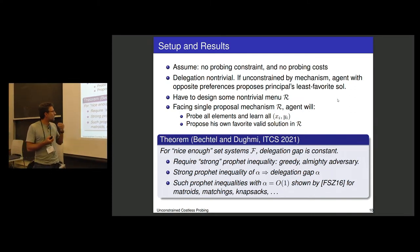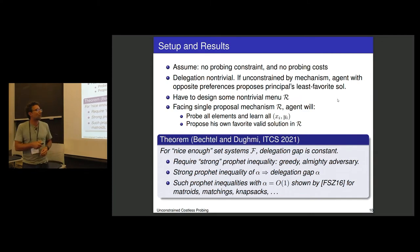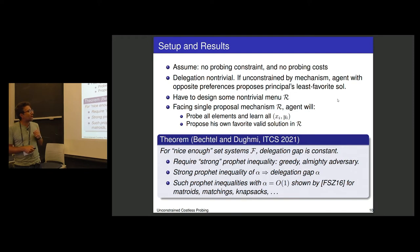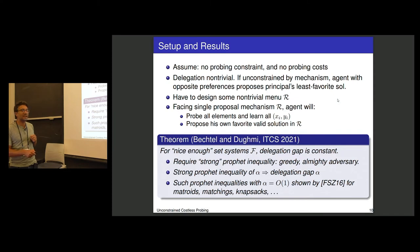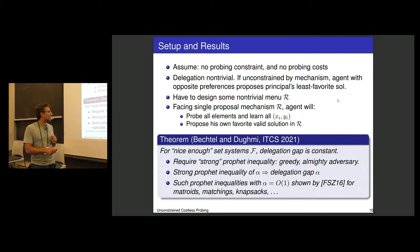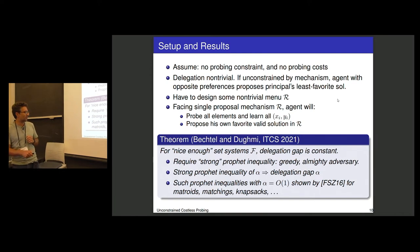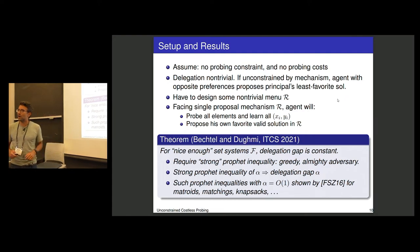A theorem from our first paper is that as long as your optimization problem is nice enough — specifically, the feasibility constraint admits a strong form of the generalized profit inequality — the delegation gap is constant. That strong form requires the profit inequality to be greedy and work against a very powerful almighty adversary. If we have such a profit inequality with ratio alpha, we get a delegation gap of alpha. These strong profit inequalities exist for most nice set systems like matroids and matchings, as shown by the beautiful paper of Feldman, Svensson, and Zinklusian on online contention resolution schemes.